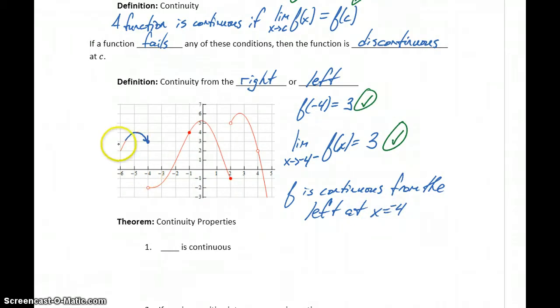So it's not continuous at negative four because there is this break, but as we approach from the left, from negative infinity up to negative four, we can trace that part of the graph without picking up our pencil.